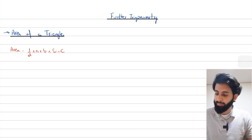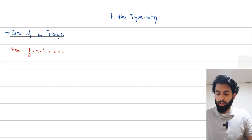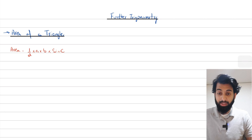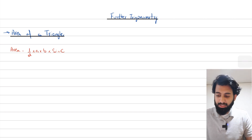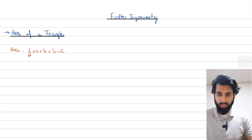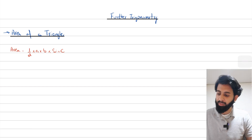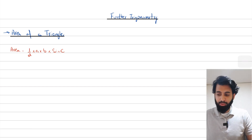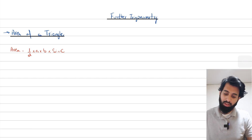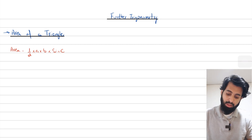Hello everyone, hope you guys are doing well. In this video we're going to learn the formula for calculating the area of a triangle, and this is one of the concepts of further trigonometry. Here's the formula — I'm sure you must have seen it somewhere. It's half times a times b times sine C.